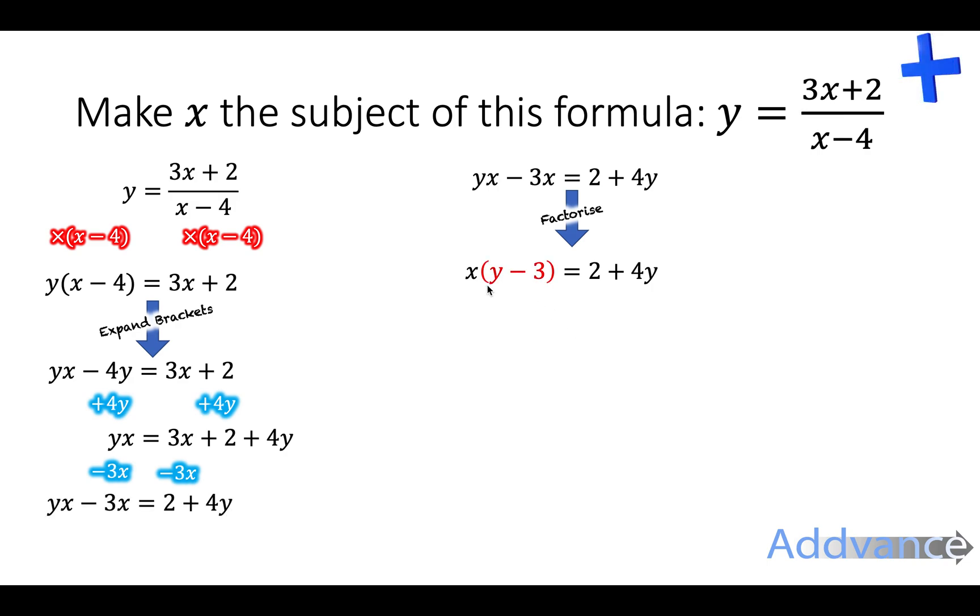Then we have x times y minus 3. So we do the opposite of times by y minus 3. We divide by y minus 3. And we get x equals 2 plus 4y divide by y minus 3. And we have the final answer.